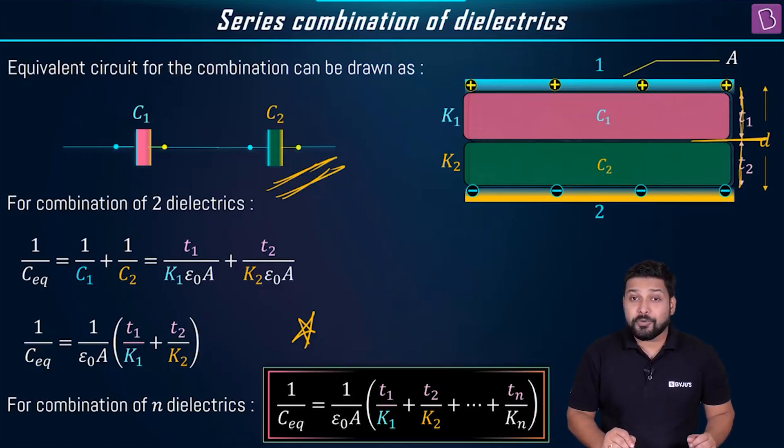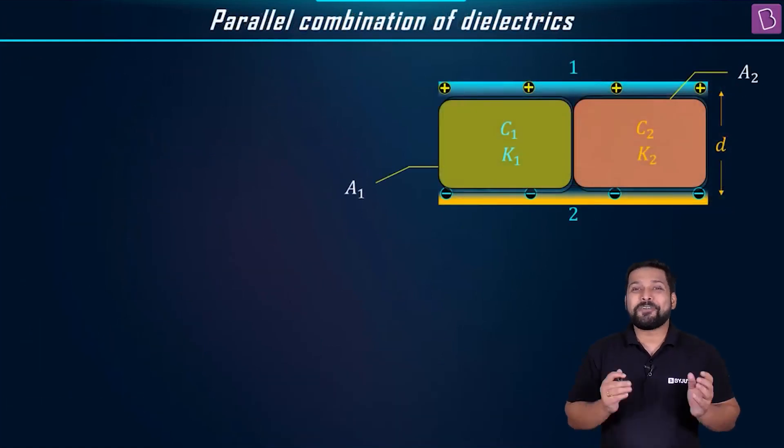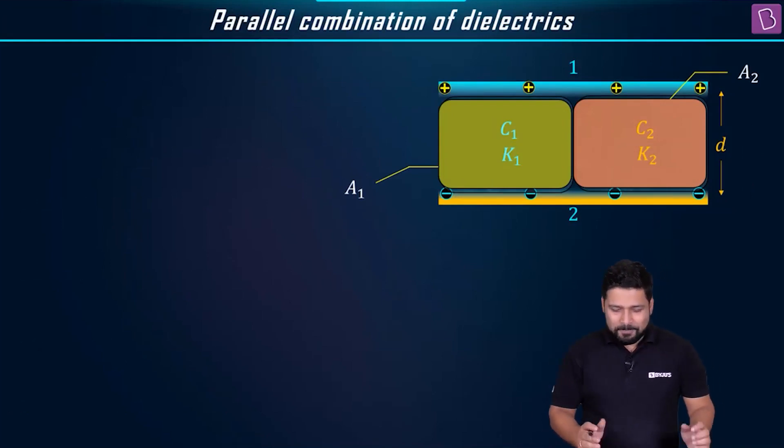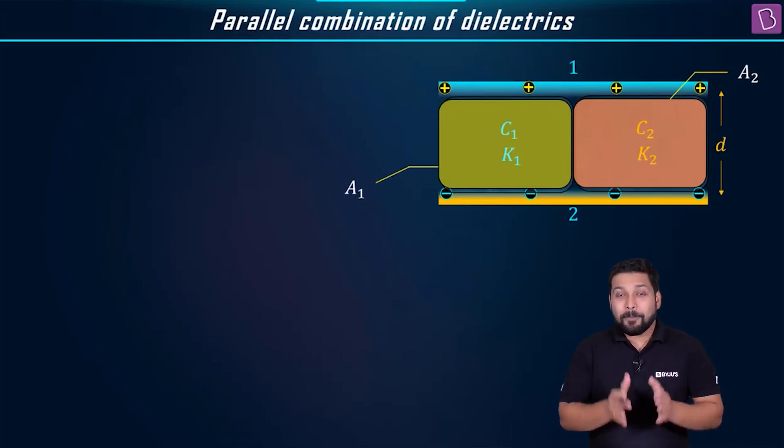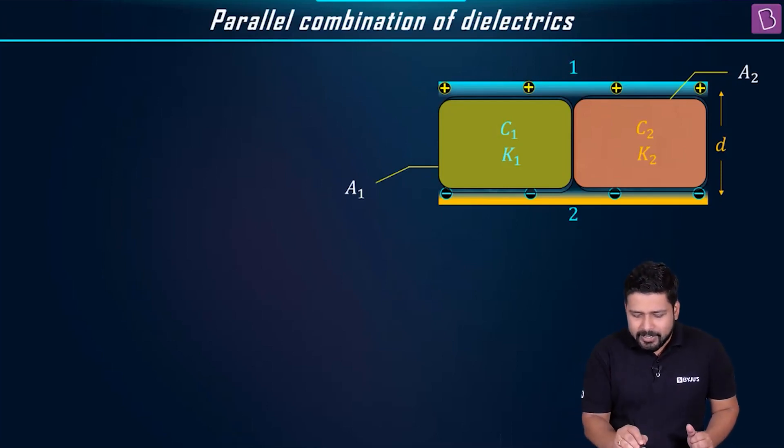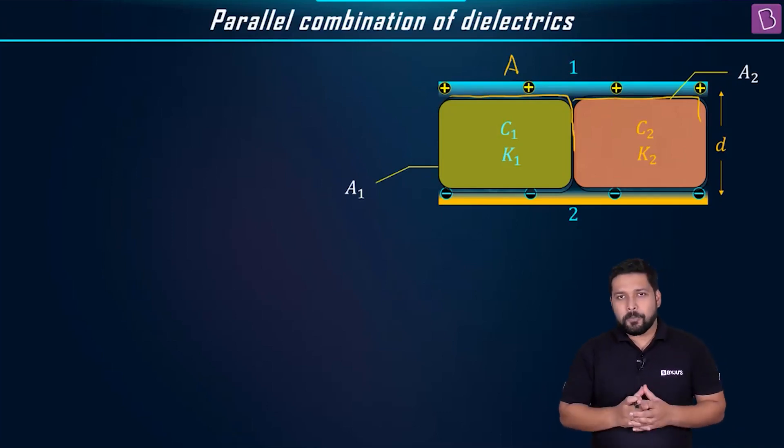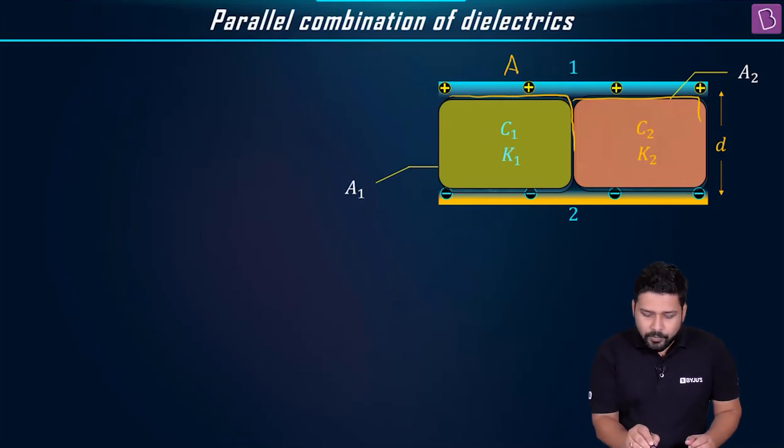Shall we go ahead? Shall we look at the next type? The next type, as you would have guessed for sure, is going to be the parallel combination. In parallel combination, what happens is that we place these dielectrics perpendicular to the plates. The dielectric slabs are placed perpendicular to the plate. In other words, we can say that this is the area A and you are dividing it in terms of area. This type of combination will be a parallel combination.